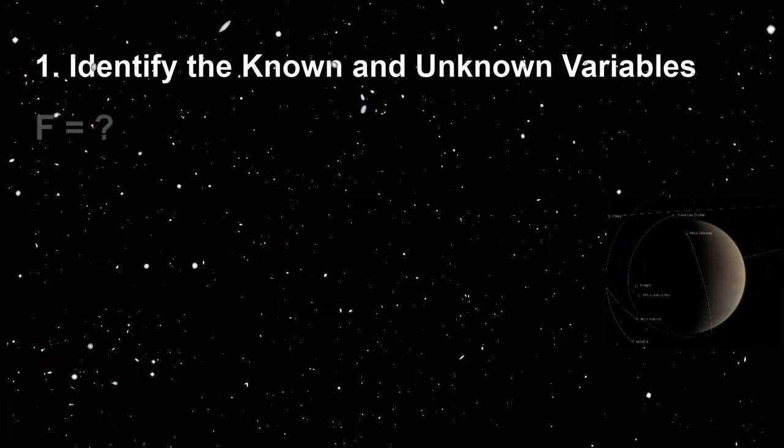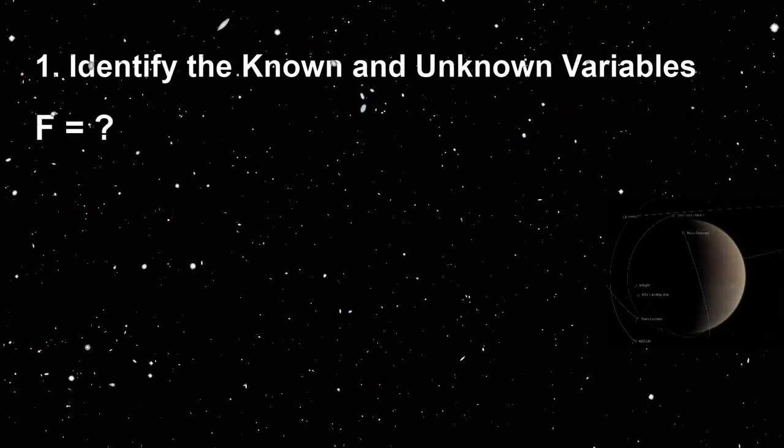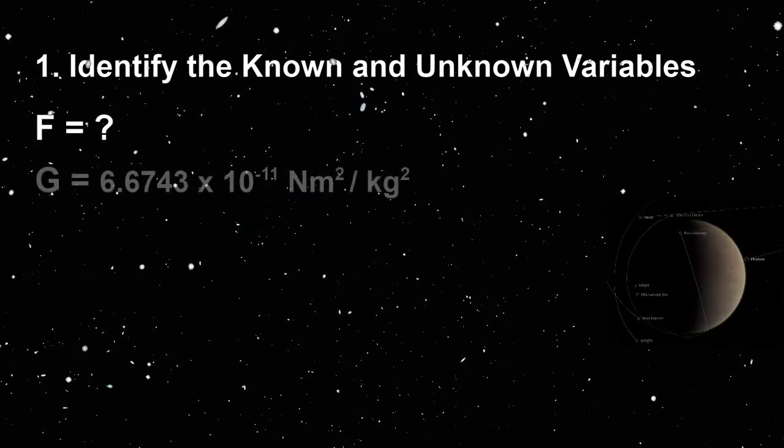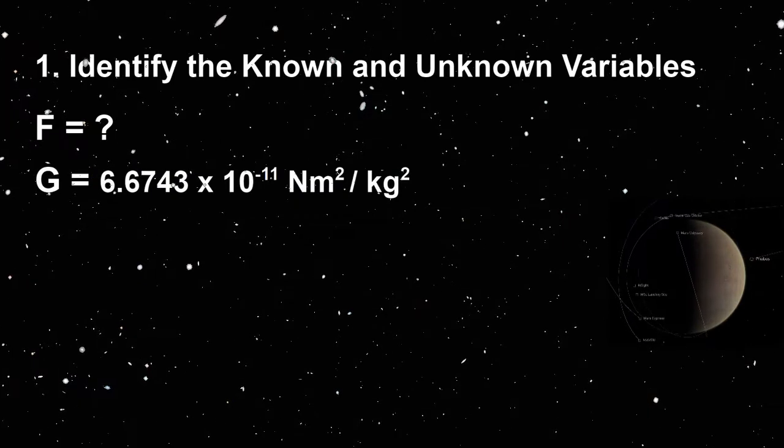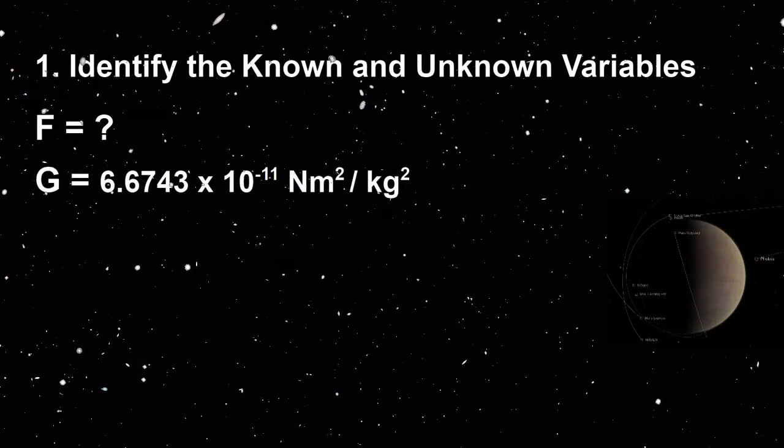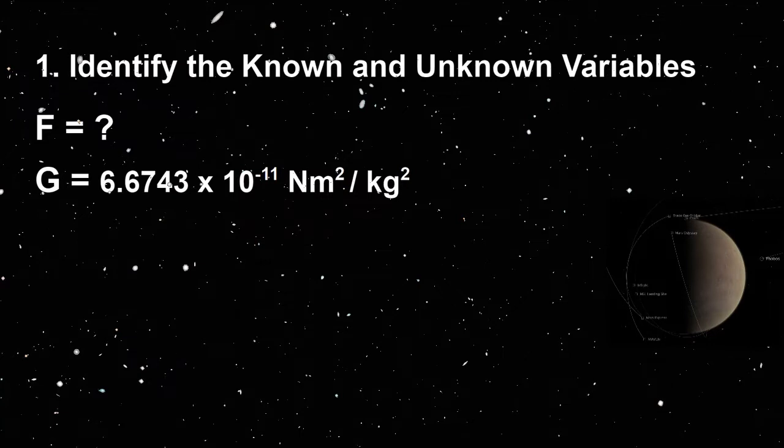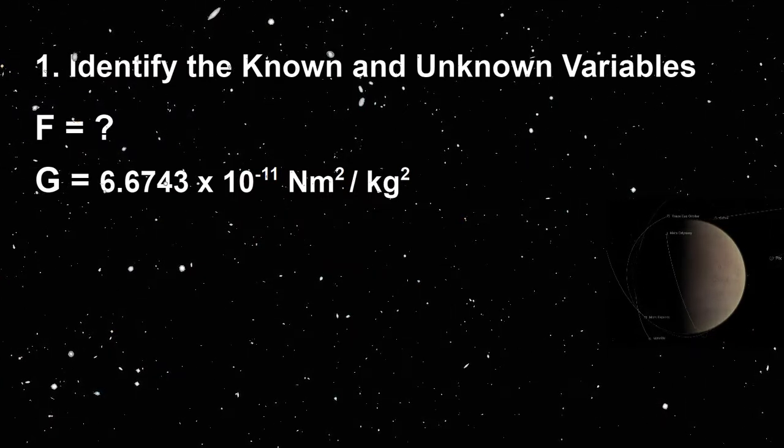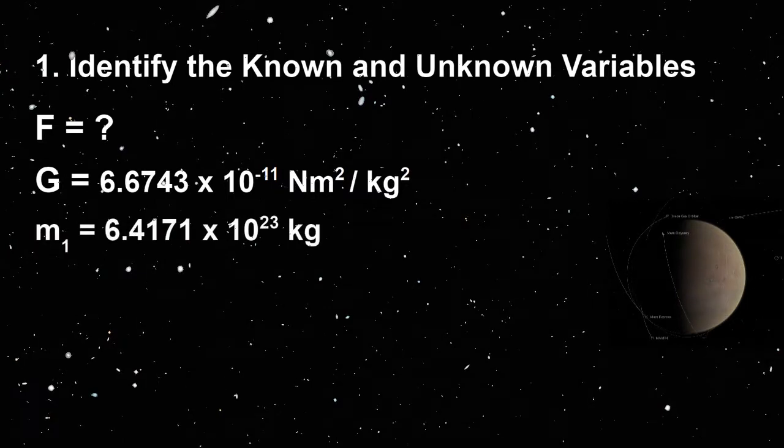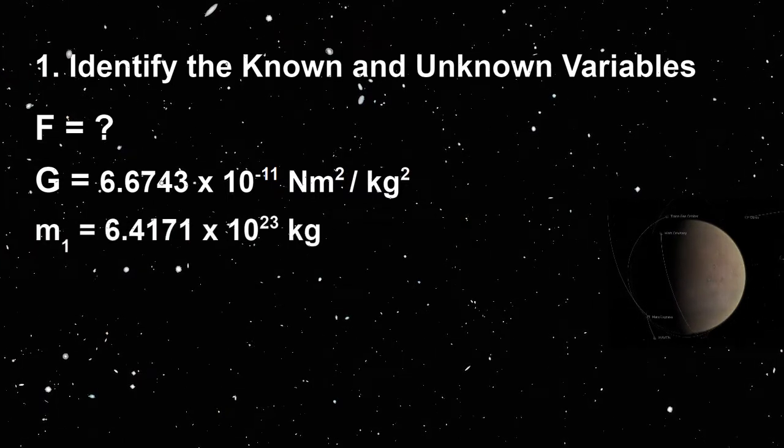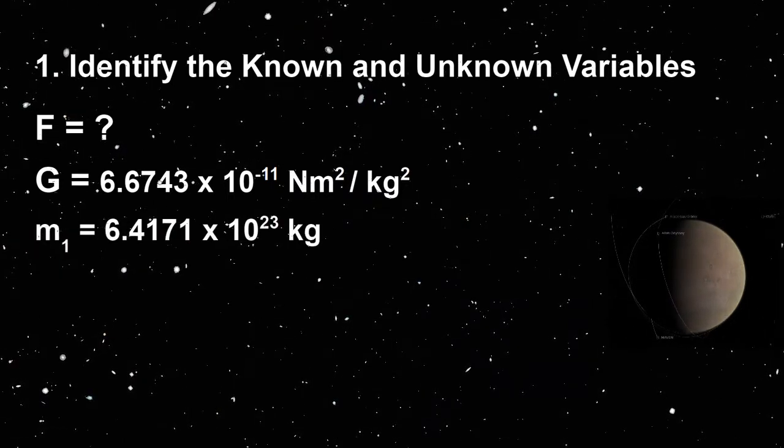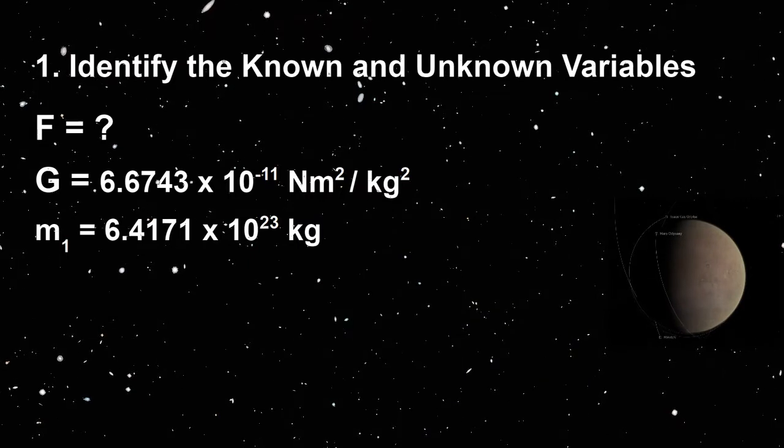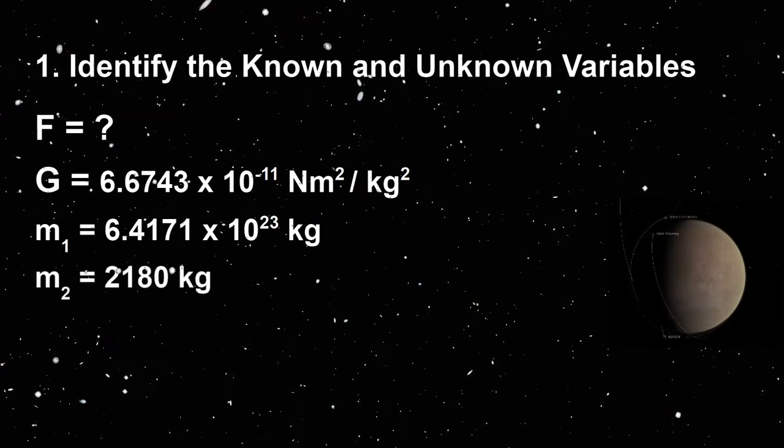The first step is to identify the variables we will use in the calculation. F is the unknown. The gravitation constant, G, equals 6.6743 times 10 to the -11 newton meters squared per kilogram squared. M1 is the mass of Mars, 6.42 times 10 to the 23 kilograms. M2 is the mass of MRO, 2,180 kilograms.